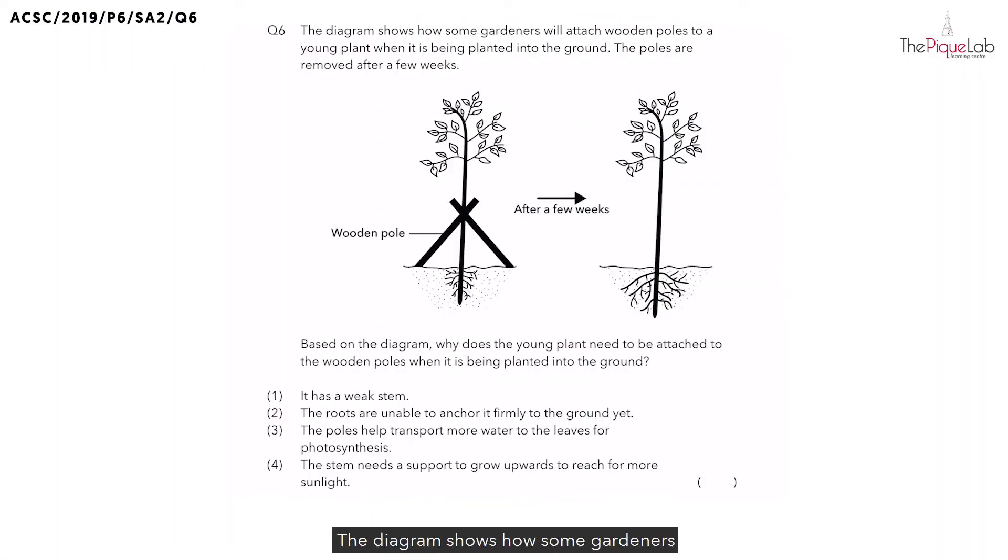Question 6. The diagram shows how some gardeners will attach wooden poles to a young plant when it is being planted into the ground. The poles are removed after a few weeks. Based on the diagram, why does the young plant need to be attached to the wooden poles when it is being planted into the ground?